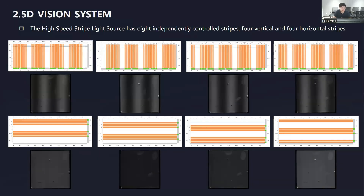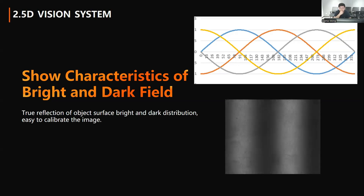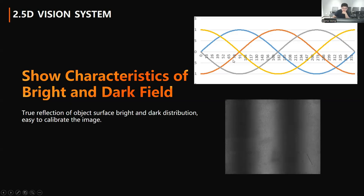These are the eight different stripe lights projected onto the surface. Why do we need eight different lights? First, with only one direction we can only get the gradient in one direction, so we need gradients in both X and Y directions for accurate surface gradient at each point. Second, for each direction we project four different lights with a phase difference of 90 degrees. These four lights at each point capture the image at four different brightness levels, which helps show characteristics of both bright and dark fields.